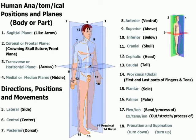Number two is the coronal plane, also known as the frontal plane. It's easy to remember that this plane divides the body into a front portion and a back portion. This plane passes through the coronal suture, or the crowning suture, in the middle of the skull, dividing it into a front part and a back part — hence we get the coronal suture and the coronal plane.